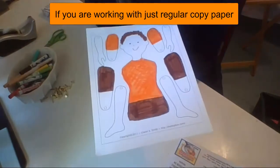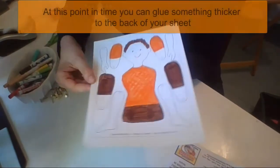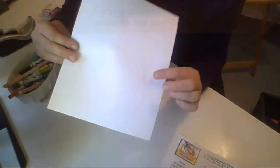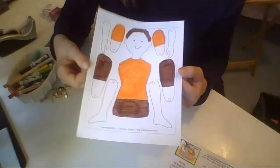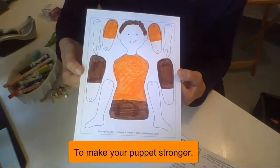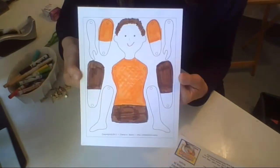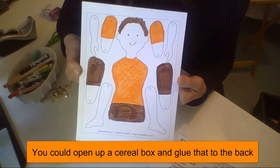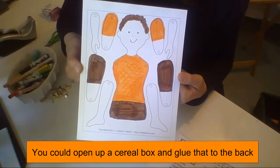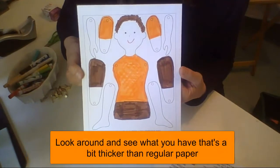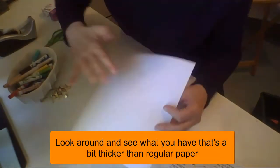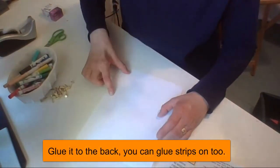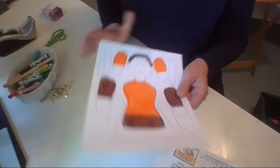If you are working with just regular copy paper, at this point in time you're going to want to glue something thicker to the back of your regular copy paper to make your puppet stronger. What would be something good that you could attach to this to make it stronger? I'm thinking something like a cereal box. That's a good thickness paper. You look around your house and see what you have and you're just going to glue everything onto it. You could use a few different pieces of thicker paper. That's fine. And then we're going to cut it out.